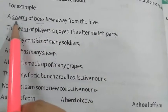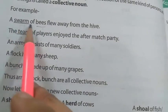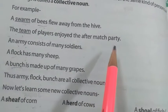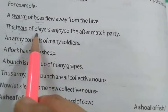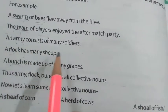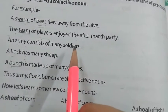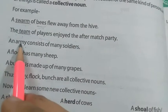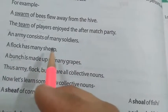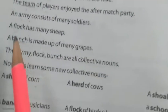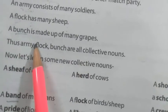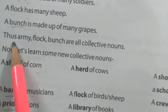Here, 'swarm' is a name given to the group of bees. Then, 'the team of players enjoyed the after-match party' — so 'team' is a name given to the group of players. Swarm and team are collective nouns. An army consists of many soldiers. A flock has many sheep or many birds. A bunch is made up of many grapes, and 'bunch' can also be used for a group of keys. So army, flock, and bunch are all collective nouns.